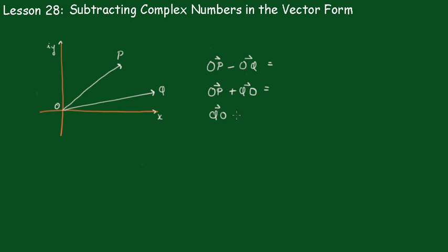QO plus OP. So if we go from Q to O, Q to O, and then from O to P, that's the same as going from Q to P. Q to P, and there we have it. There again you see there's that link.